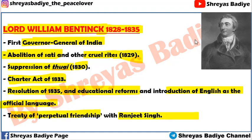William Bentick also signed the Treaty of Perpetual Friendship with Ranjit Singh in 1831 — a friendship treaty between the British East India Company and Ranjit Singh, the ruler of Punjab. Both parties agreed to help each other. This is the same thing which we have studied in the Punjab State chapter.